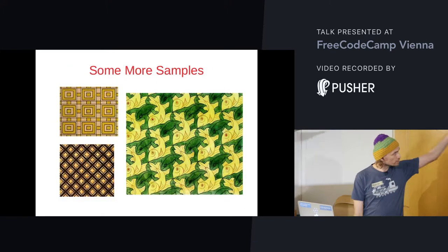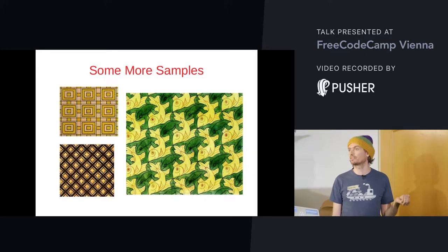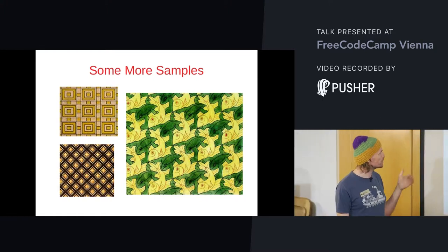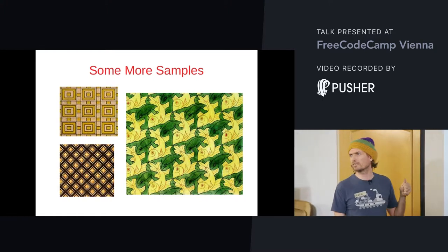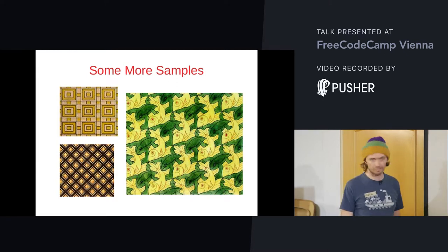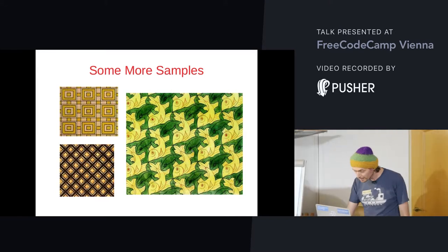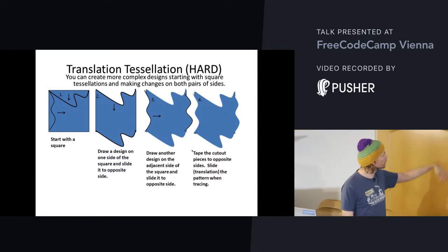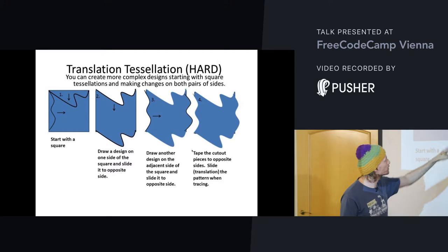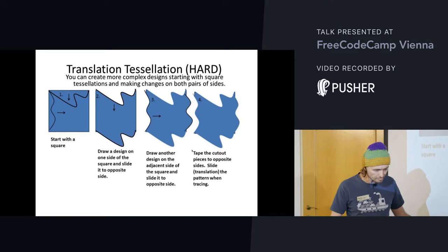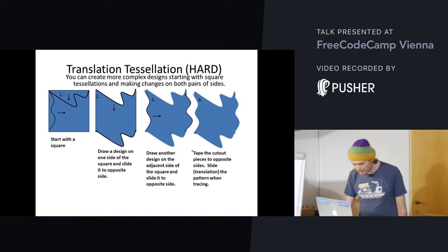There are some more samples. There's this artist called Escher — I think he's dead now — and he did only periodic tessellations. He went to Spain to see the Alhambra and got inspired. He said to himself, 'I want to do the same thing with animals,' and then he drew animals. You can do this at home — you take paper, cut it out, put it on tape, and you have a tessellation. It's not hard.